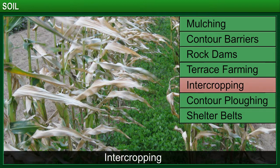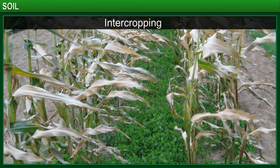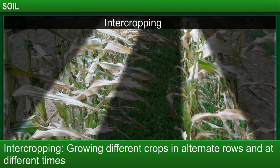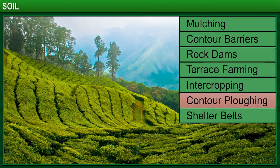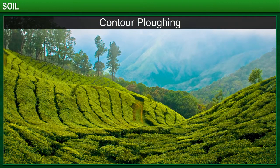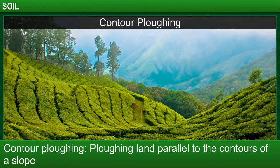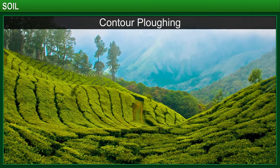Intercropping is a widely used practice in China to reduce soil erosion due to rainwash. In this method, different crops are grown in alternate rows and are sown at different times. Contour plowing is the method of soil conservation in which the land is plowed parallel to the contours of a slope. This creates a barrier that prevents water from flowing down the slope. Contour plowing has been used to prevent soil erosion in the prairie regions in the USA.